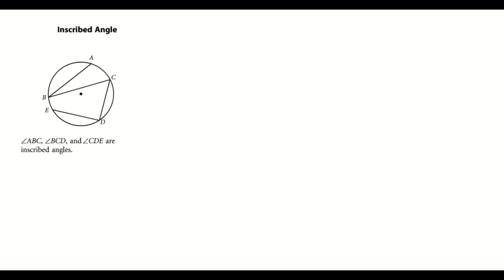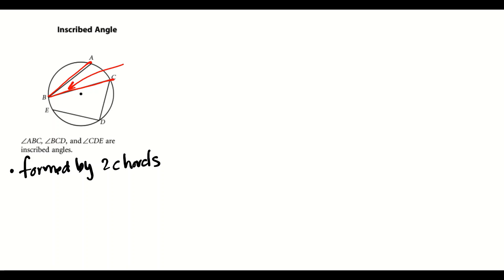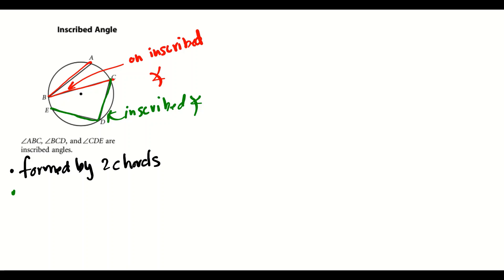Next we have inscribed angles. Inscribed angles are very similar to central angles, except they are formed by two chords as opposed to two radii. If we highlight two chords — chord AB and chord BC — this angle is called an inscribed angle. Chords DE and chord CD also form an inscribed angle.